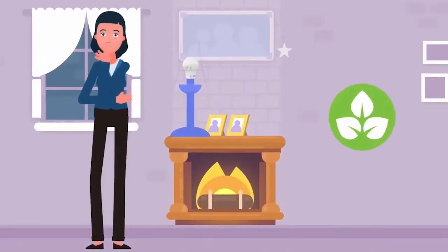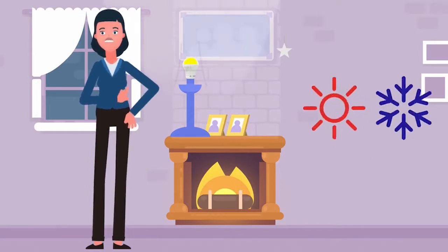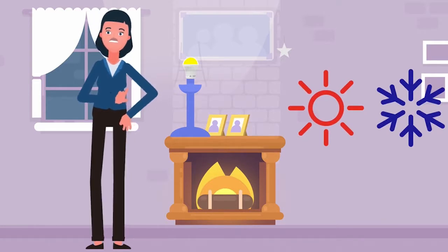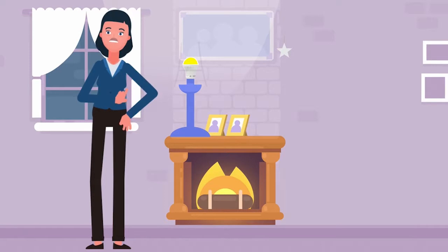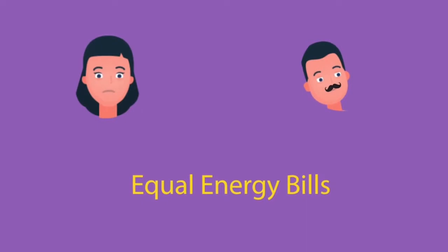Judy, a tenant in the building, was also frustrated. She's a judicious user of electricity who believes strongly in conservation. She uses LED bulbs and uses her AC and heat as little as possible. Yet she was paying the same energy fee in her rent as her neighbor John, who she knew was careless with his electricity.